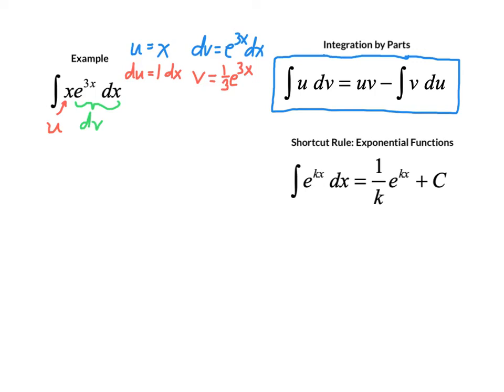Then, there's always this integral, v times du, remaining that we're going to need to tackle. So the plus c will eventually show up here at the end of the problem, but we don't need to worry about it now.